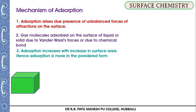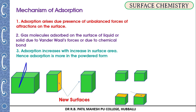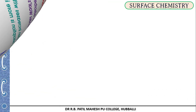Adsorption is found to be maximum in powdered form because of the increased surface area. When we cut a substance, we get new surfaces available for adsorption that were not available earlier. If we cut it into four pieces, we get four new faces available for adsorption. Hence, as we keep splitting the substance, we get more and more surface area available for adsorption.